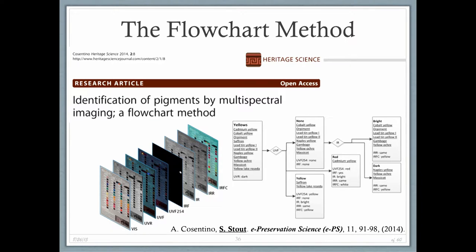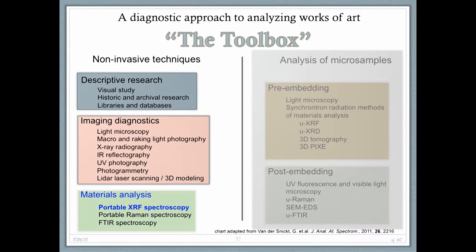The flowchart for yellow pigments is represented here, but it shows that in the end there are nine pigments that can't be distinguished — one group of three and one group of six. So we want to add another technique from the toolbox, portable XRF spectroscopy, to try and narrow down the group.